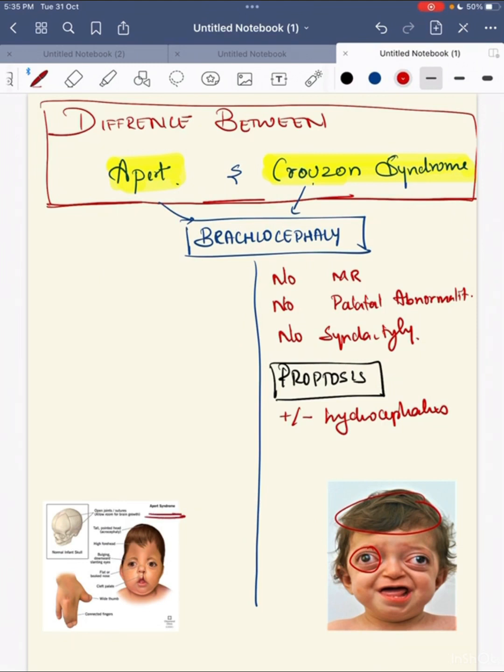While in Apert syndrome, the child will present with mental retardation and will have palatal abnormalities such as high arched palate. Plus, the child will present with syndactyly. The child will have bilateral syndactyly.